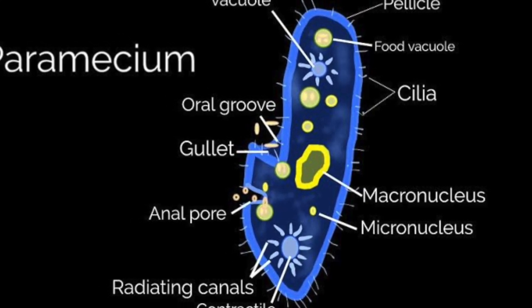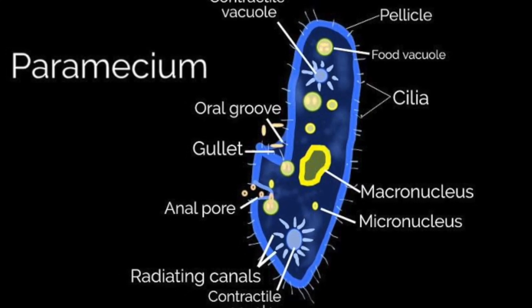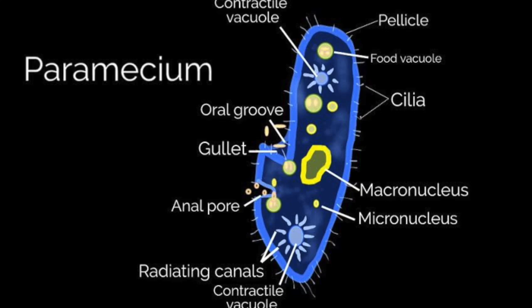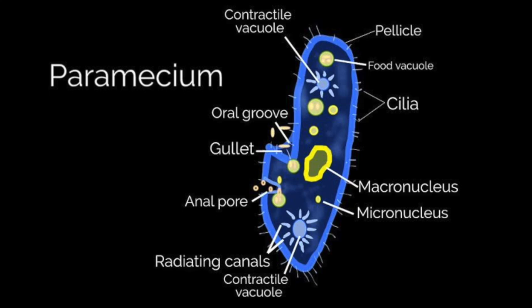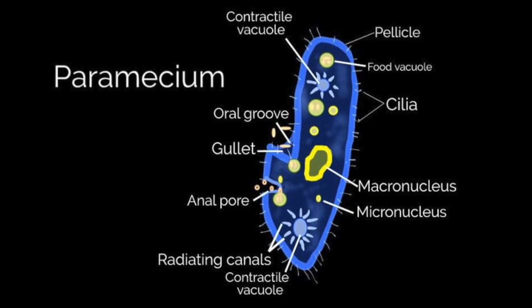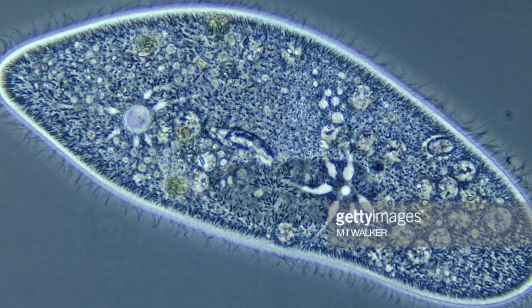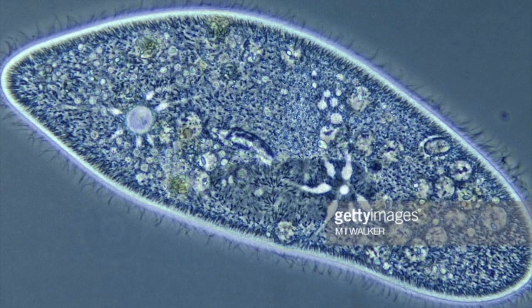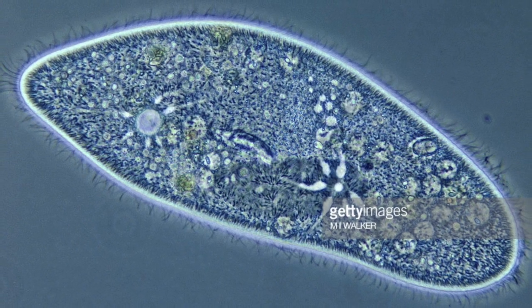The cilia is able to propel the paramecium forward by moving in a whipping motion. When the paramecium hits an object, the cilia propels it backwards and then forwards again. The paramecium's mobility is a major part of its life; it has been calculated that the paramecium spends more than half of its energy on movement through water. Asexual reproduction occurs in the paramecium through binary fission, which leads to the cell dividing transversally, and it often takes place about two to three times per day.